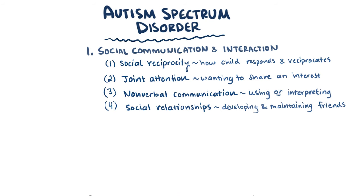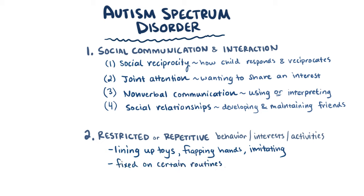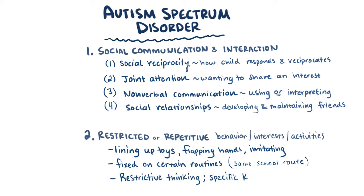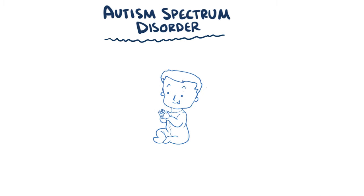The other major area is called restrictive and repetitive behaviors. This category is pretty broad and can include a whole bunch of behaviors, some being more well known than others, like lining up toys in a ritualistic sort of way, or flapping one's hands, or imitating words or phrases. The child might be fixed on certain routines, like taking the same route every day to school. Or they might have restricted patterns of interest, like having a very specific and in-depth knowledge of the Titanic, or vacuum cleaners. Children with autism spectrum disorder might exhibit one or more of these deficits, and vary in how severe the deficit is.